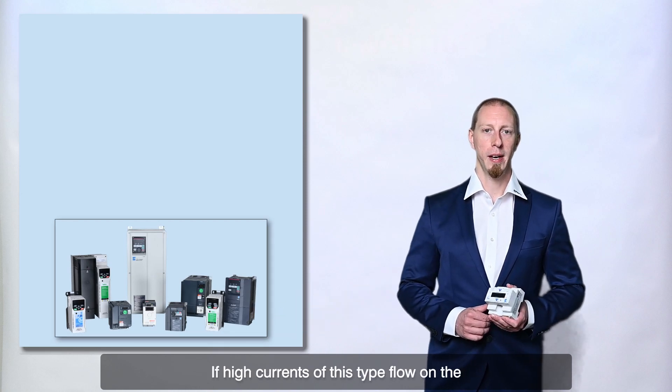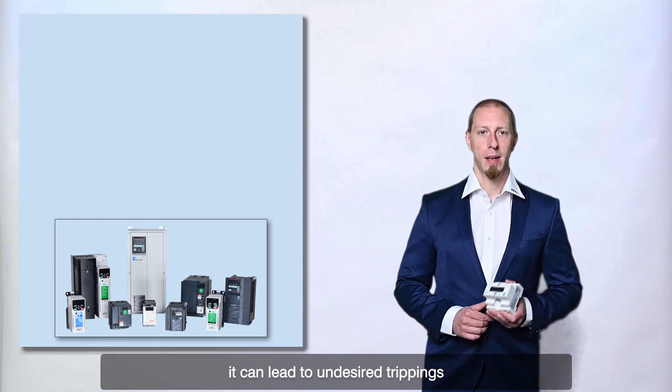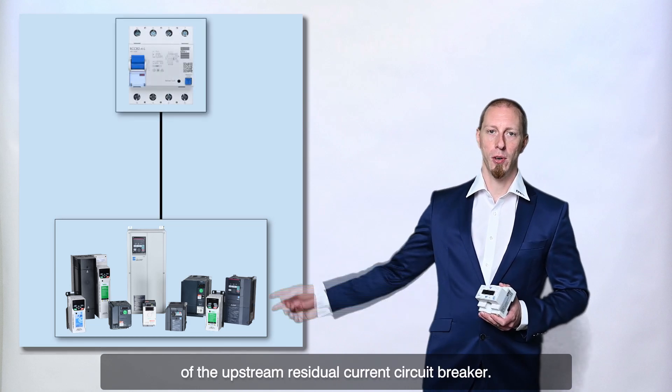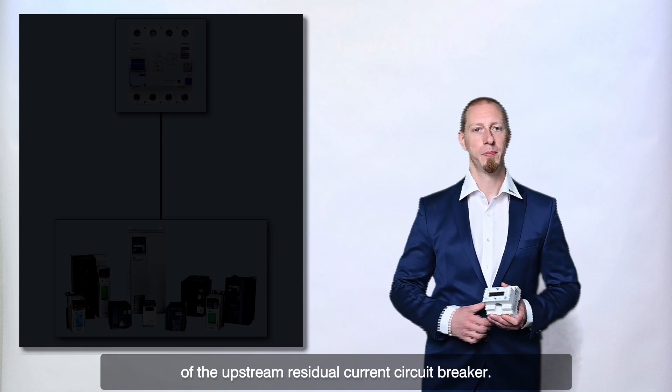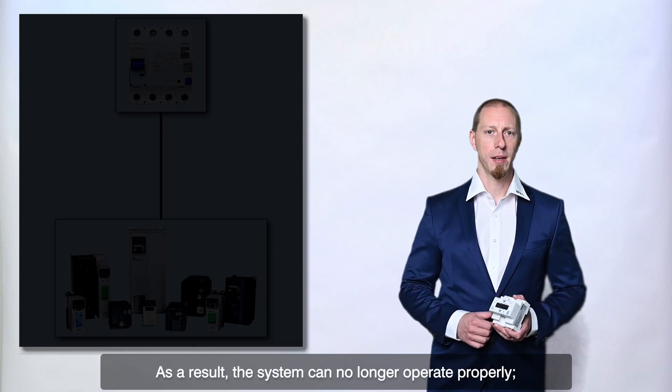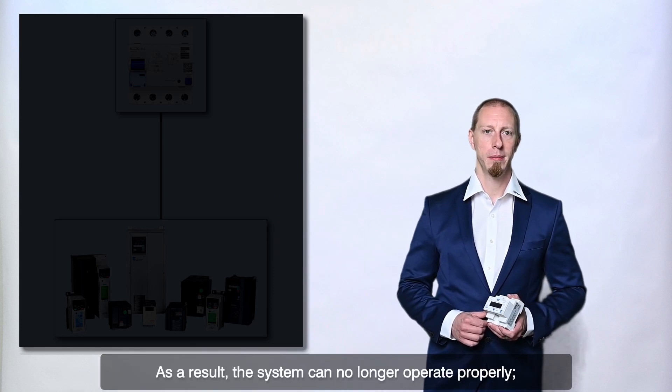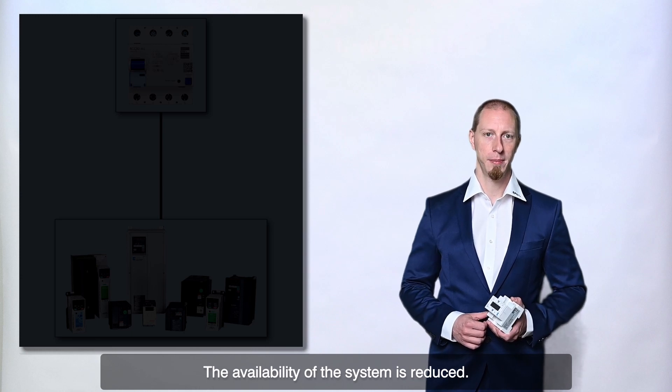If high currents of this type flow on the protective earth conductor of a plant, it can lead to undesired tripping of the upstream residual current circuit breaker. As a result, the system can no longer operate properly, the availability of the system is reduced.